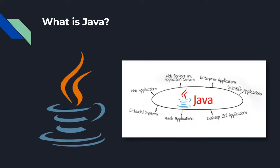Java is, by their own description, "a programming language and computing platform first released by Sun Microsystems in 1995." Java is an object-oriented language and is platform agnostic, meaning it can run on any and all machines. This has led to it becoming one of the most popular languages, and Java themselves state that 15 billion devices run Java.